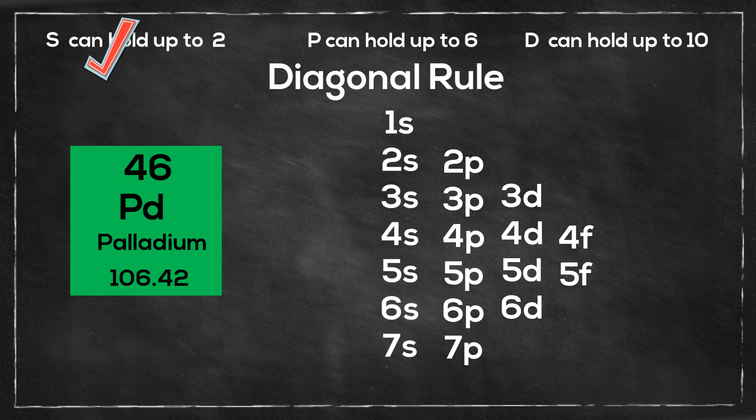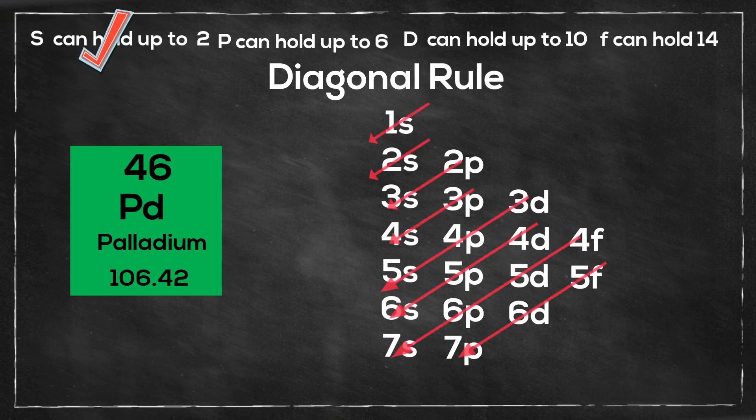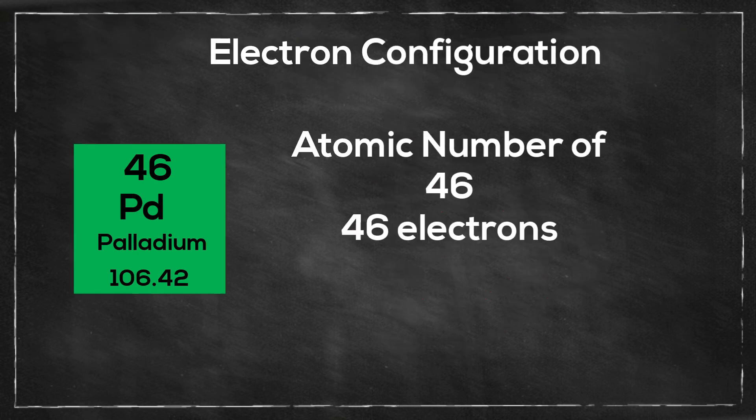The s orbitals can hold up to 2, the p can hold up to 6, the d's can hold up to 10, and the f's can hold up to 14. And notice it goes up by 4 each time.